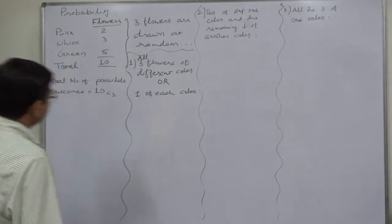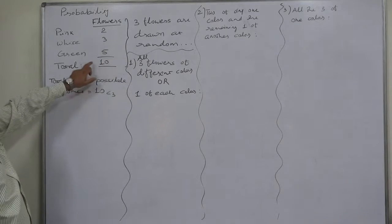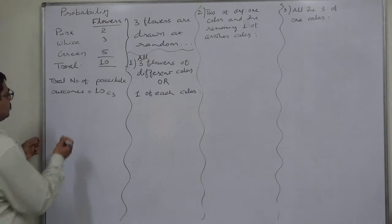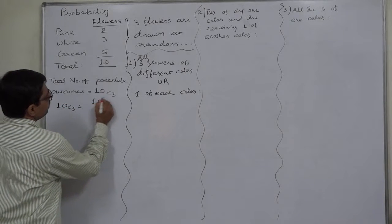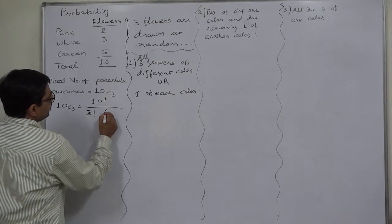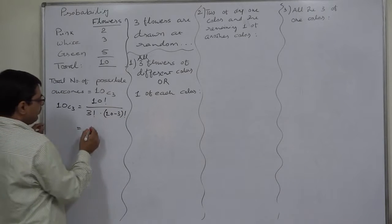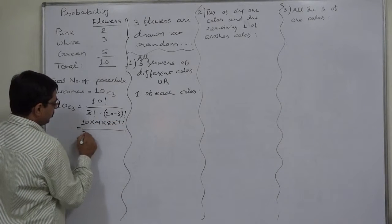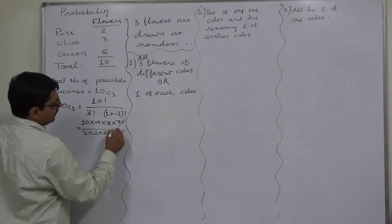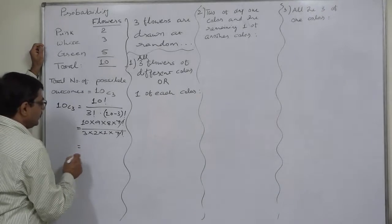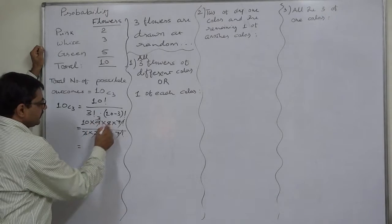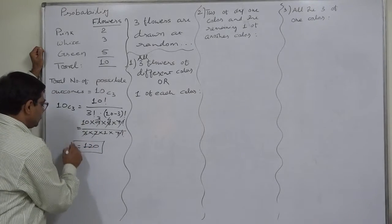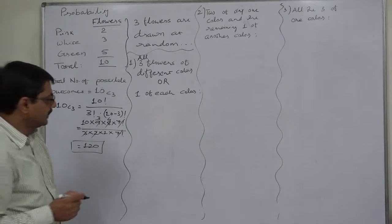First, if three flowers are drawn out of ten, in how many ways can we draw them? The answer is 10C3. 10C3 equals ten factorial upon three factorial into seven factorial. Expanding: three factorial is 3×2×1, and we cancel the seven factorials. Simplifying gives 120. So out of ten flowers, three can be drawn in 120 ways.